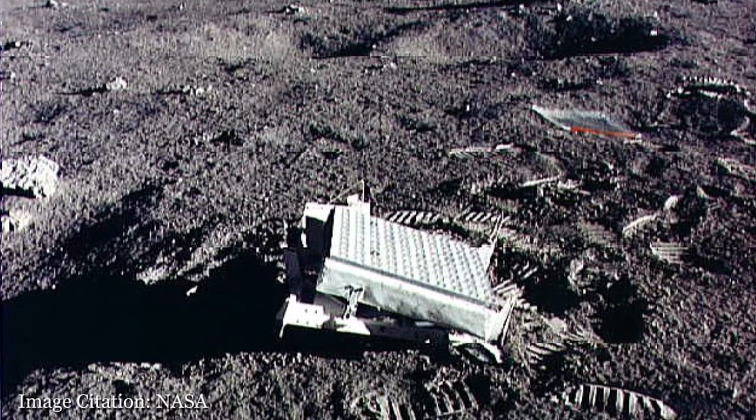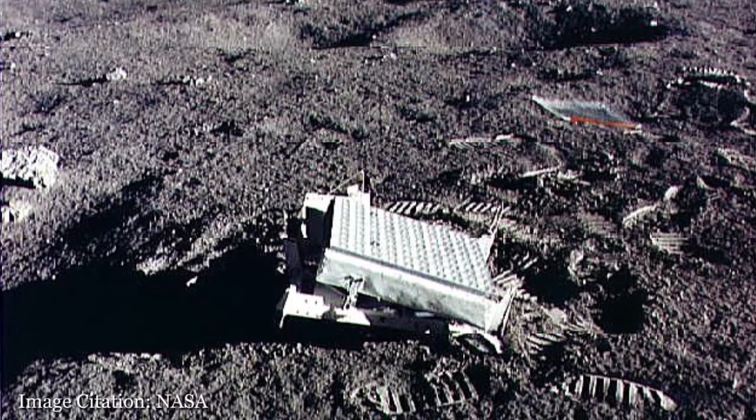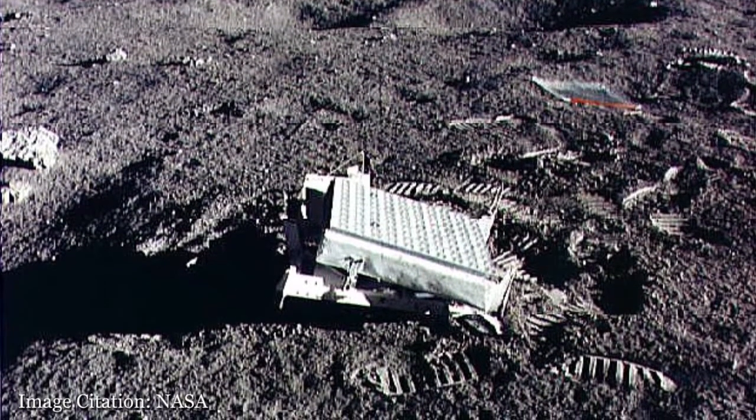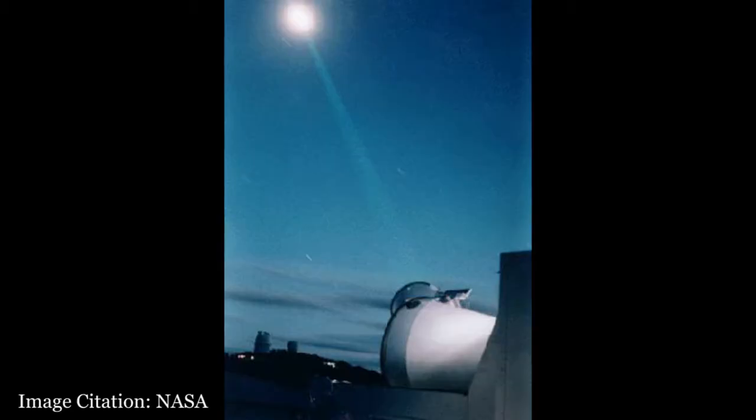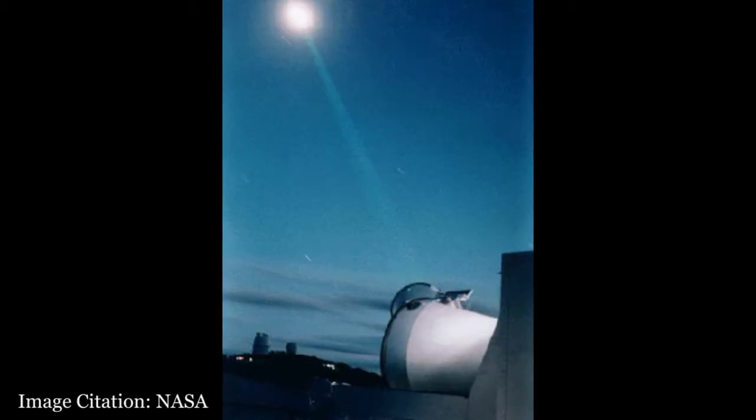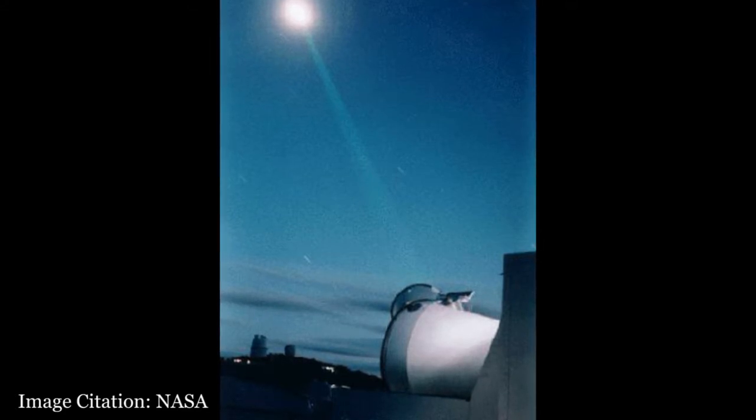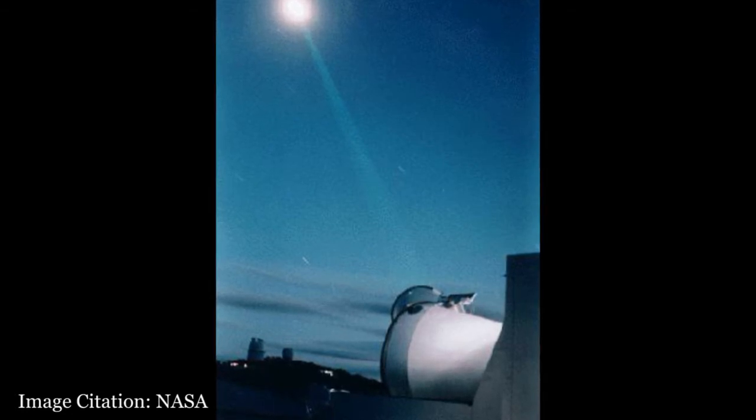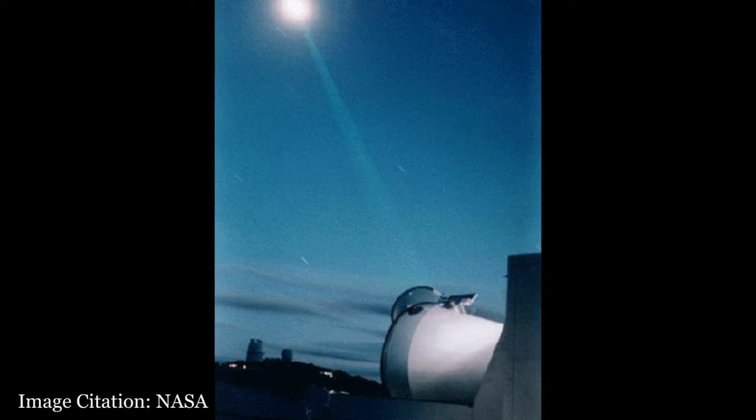Corner cube reflectors are used to very accurately measure the distance to the moon. Several Apollo missions left behind reflectors on the surface of the moon. Carefully aimed laser pulses are shot at the moon and the interval needed for the return of the pulse to the same location by the corner cube reflector allows an accurate determination of the distance to the moon, which can then be used to improve our determination of the lunar orbit.